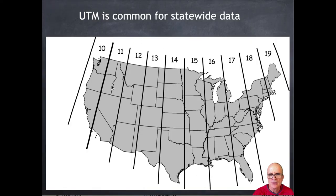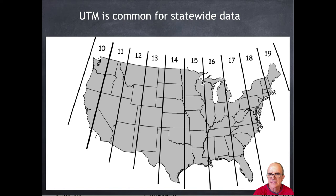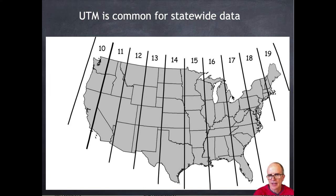This UTM system is common for statewide data and has many zones. Zone 15 is what we usually use in Minnesota, giving large northing values and smaller easting values. Some states are in trouble — like Wisconsin — because the UTM zone really splits the state in two. So Wisconsin uses a WTM, a UTM-like system defined the same way with similar parameters as the UTM using a transverse Mercator, but shifts the zone three degrees so the whole state falls inside that single zone. Michigan, on the other hand, just uses zone 16 for most of their data.